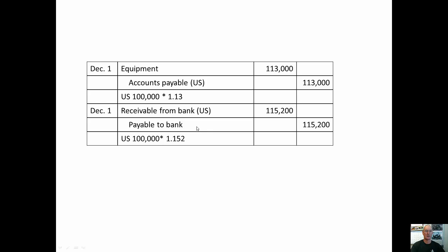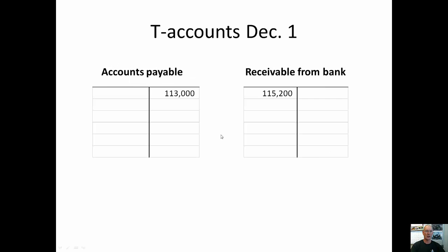The foreign currency amount gets the adjustment, and on your hedge, the domestic payment does not get adjusted. That's another common mistake that students make. Here we have T-accounts as of December 1 showing your account payable and your receivable from bank.